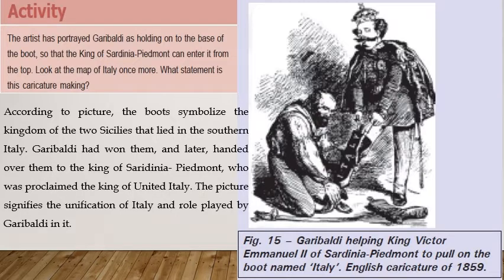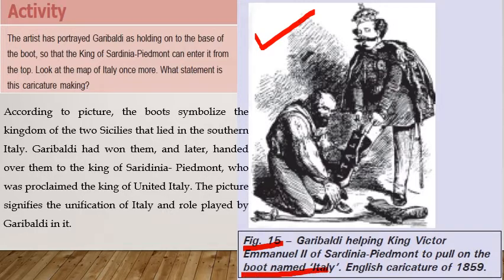Now, the picture given in Figure 15 shows Garibaldi helping King Victor Emmanuel II of Sardinia-Piedmont to pull on the boot named Italy. This is in regard to the Italian unification — a caricature by an English caricaturist of 1859.